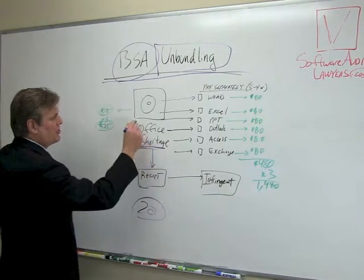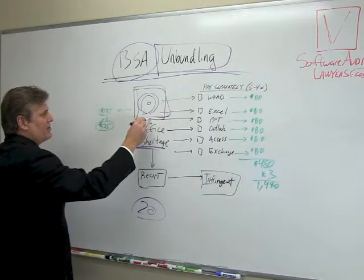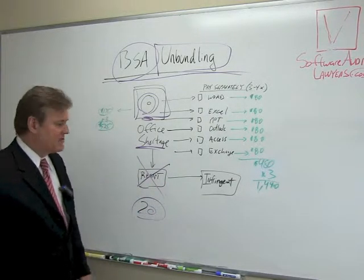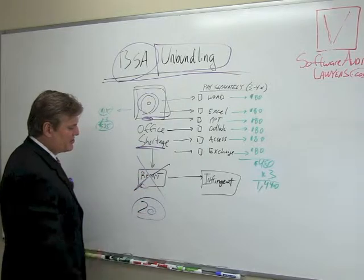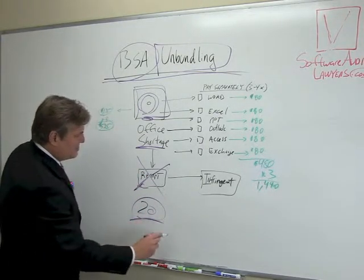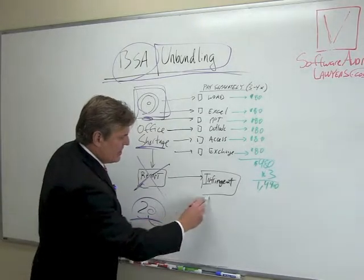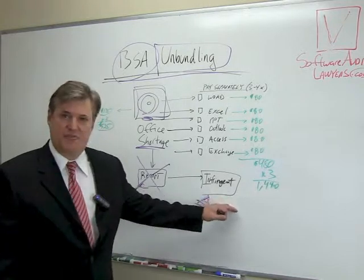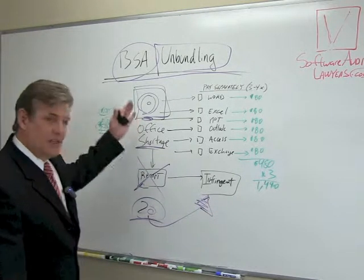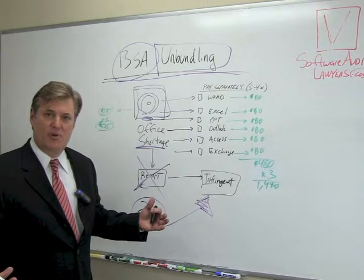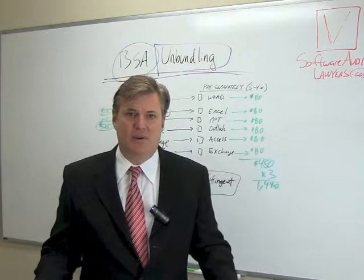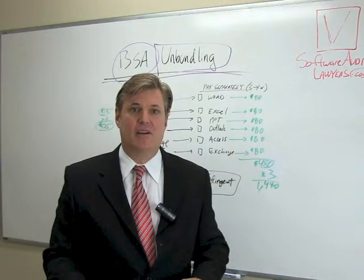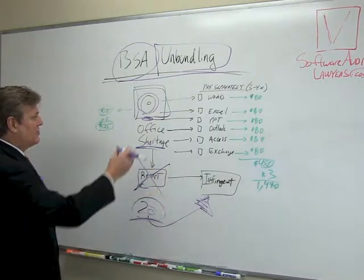Say you have a Microsoft Office shortage — software installed on the computer but you can't find the receipts or proof from vendors showing you paid for it. So you're short 20 licenses. According to the BSA and software companies, that's infringement — federal copyright infringement. You're using software with no proof that you paid for it. And one thing you'll find out during these audits is that the burden is on you to prove your licensing.